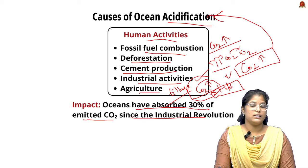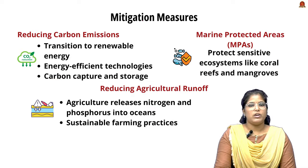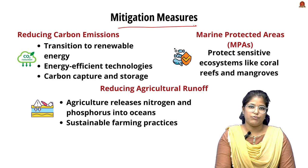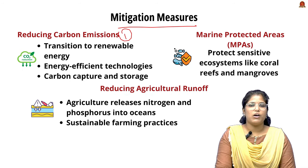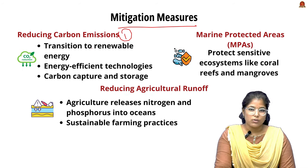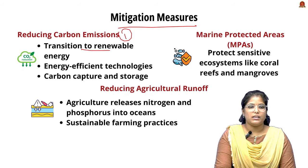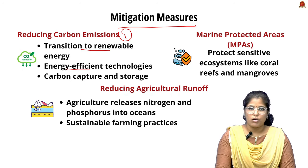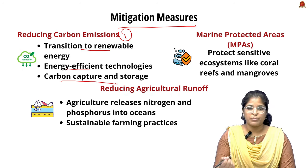In data terms, oceans have absorbed 30% of emitted CO2 since the Industrial Revolution, which is very significant. Mitigation measures include: first, reducing carbon emissions by transitioning to renewable energy and using energy-efficient technologies that do not emit high levels of CO2 or other greenhouse gases.